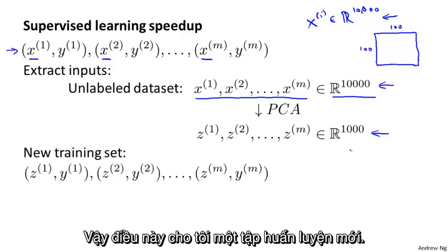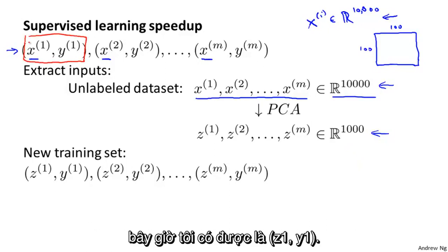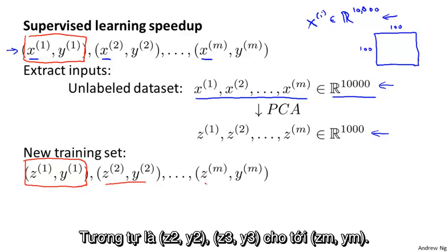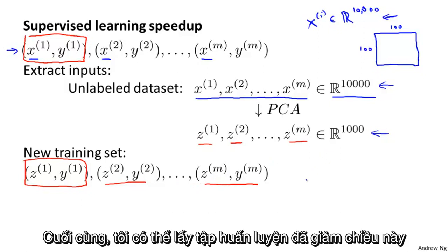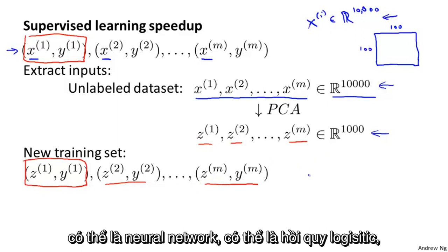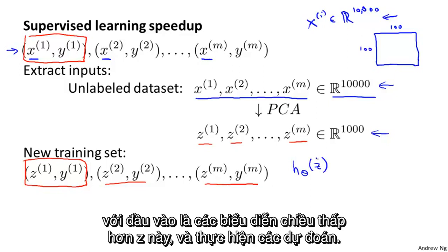This gives us a new training set. Whereas previously we might have had an example (x1, y1), our first training input is now represented by z1. So we have a new training example (z1, y1), and similarly (z2, y2), up to (zm, ym). Because our training examples are now represented with this much lower dimensional representation z1 through zm, we can take this reduced dimension training set and feed it to a learning algorithm — maybe a neural network or logistic regression — and learn a hypothesis h that takes these lower dimensional representations z and makes predictions.